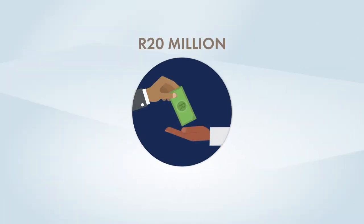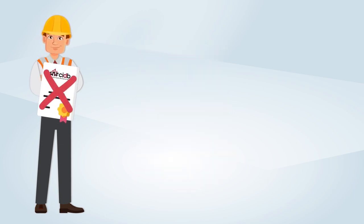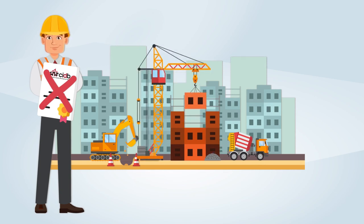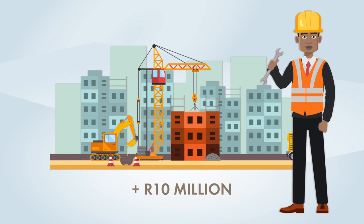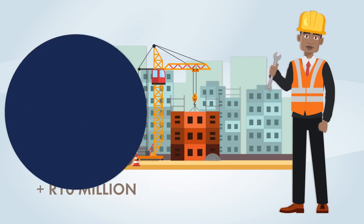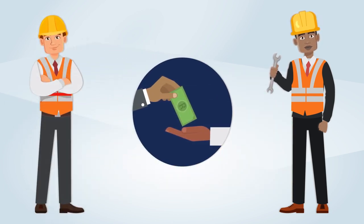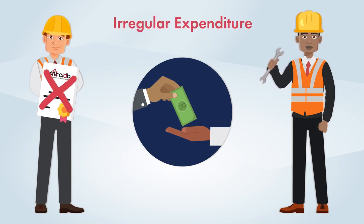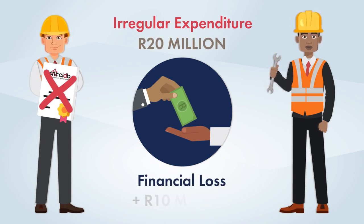An award of 20 million rand was made to a supplier that did not have the required CIDB grading for the construction of a building. Extensive remedial work to the value of 10 million rand was subsequently carried out and paid by the auditee to rectify defects, through different suppliers, in addition to the 20 million rand. All payments to the supplier without the required CIDB grading would be irregular expenditure amounting to 20 million rand, whereas the financial loss would be 10 million rand.